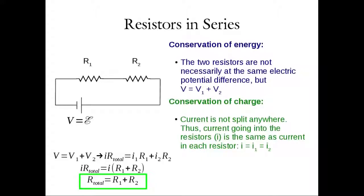For series resistors, the total resistance is just the sum of the individual resistances. Series capacitors had a different rule: 1/C_total equals the sum of 1/C_i. A helpful tip: the rules that apply for series capacitors apply for parallel resistors, and the rules for parallel capacitors apply for series resistors — just substitute R's for C's. If you can remember one, you can remember the other by swapping.